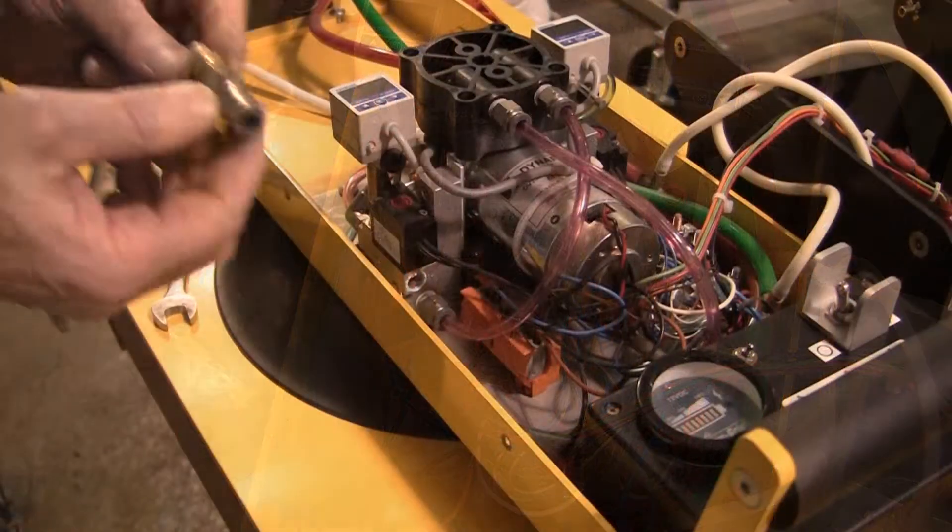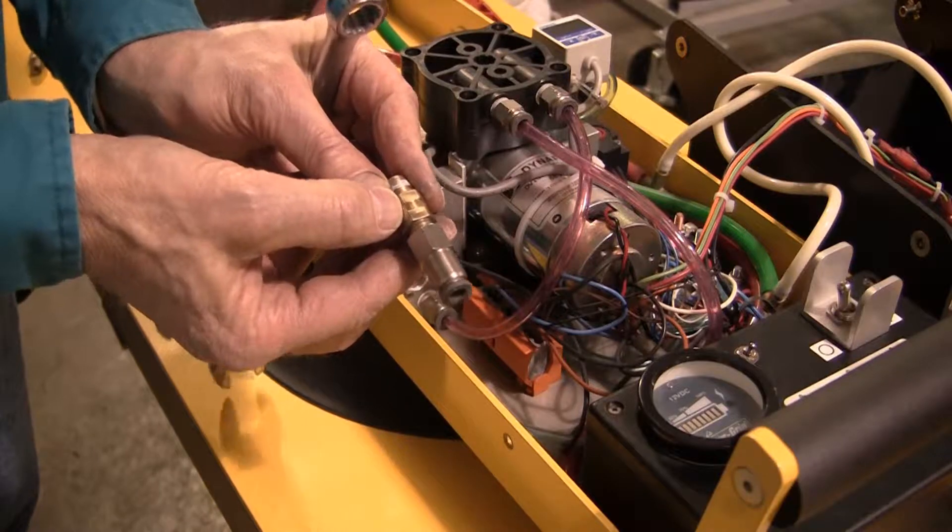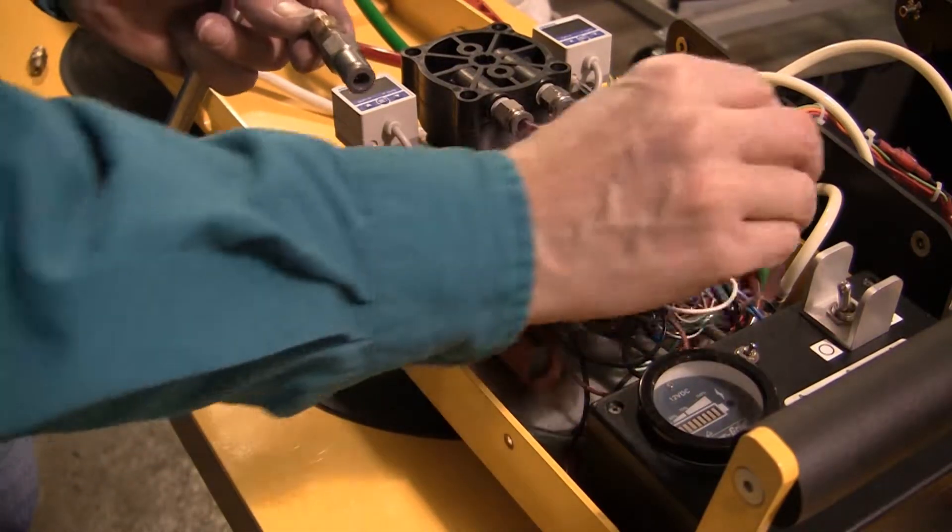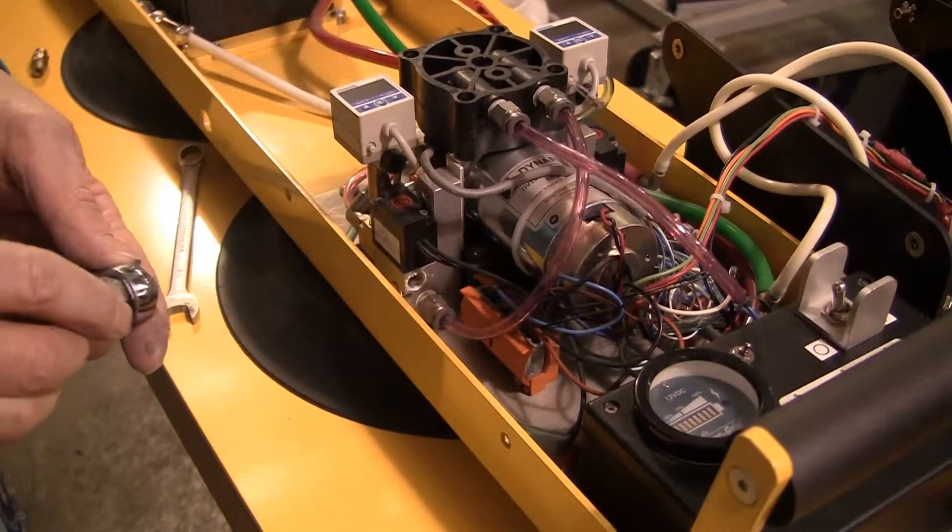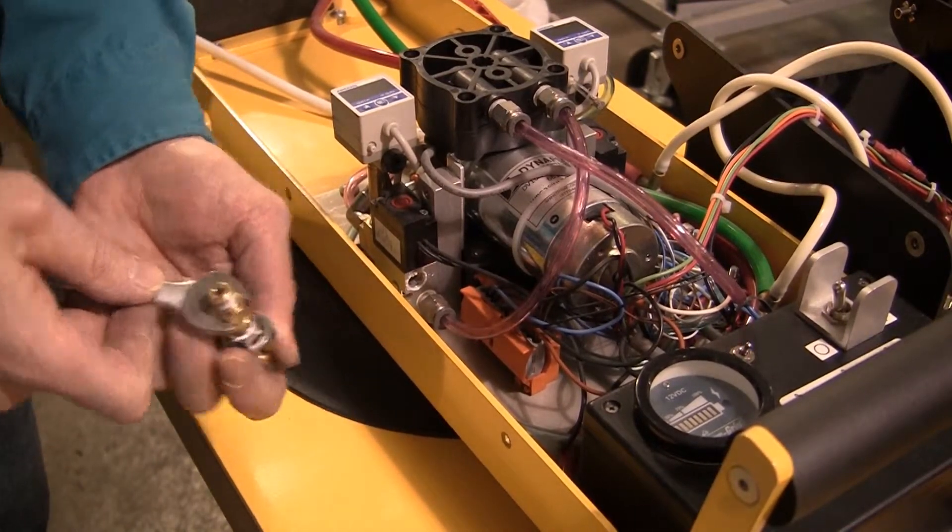Every check valve has an arrow on the side to indicate the direction of airflow. Before you replace a check valve, note the direction of the arrow for correct reassembly. Now disconnect the check valve from the hose fitting and dispose of the old check valve.